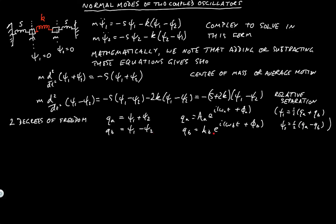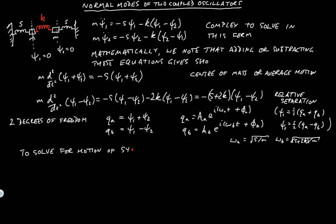We need to specify omega_A and omega_B. Omega_A is just the square root of S over M. Omega_B is the square root of (S + 2K) over M. To solve for any motion of the system, we need to specify the initial conditions.